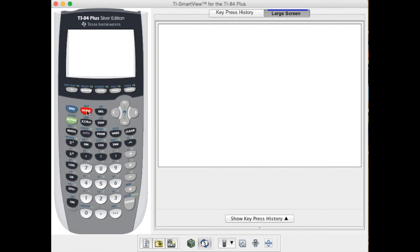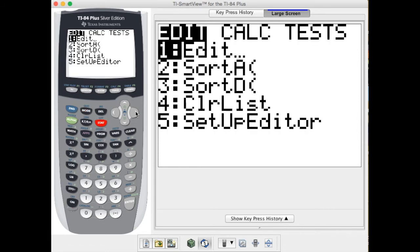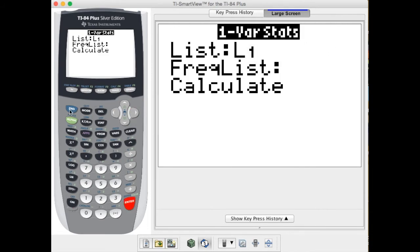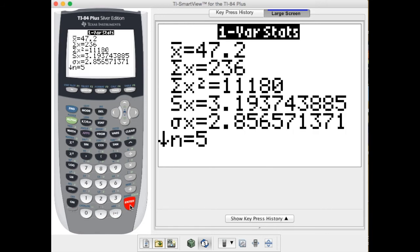I'm going to second mode to quit, go to stat, over to calc, hit enter and this time we need to identify our list as list two. I have to hit calculate and now I have a new mean and standard deviation. 47.2 is the mean and my standard deviation is 3.19.